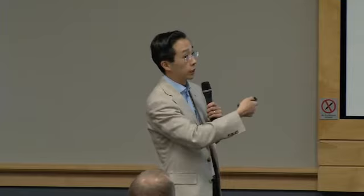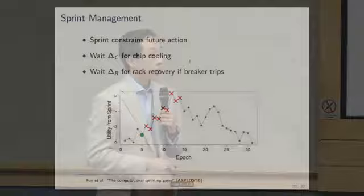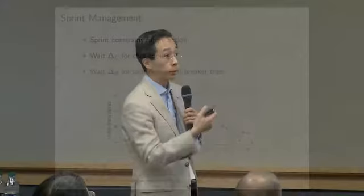When to sprint depends on application phase behavior. Which processor should sprint depends on how many others are sprinting and who benefits most. Over time, my utility from sprints will vary. At a particular point in time I need to decide whether to sprint without knowing future utility, so I must be strategic. If I sprint now I'll wait for the chip to cool, and if I trip the circuit breaker I'll wait even longer for the UPS to kick in and batteries to recharge — users must navigate these constraints strategically.